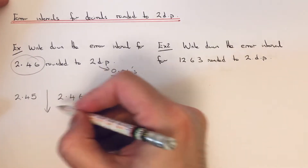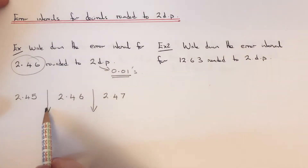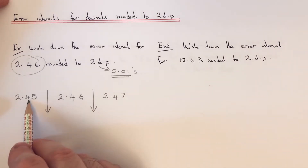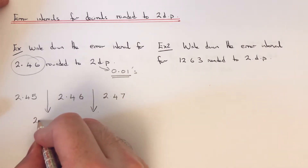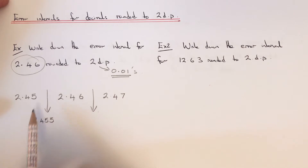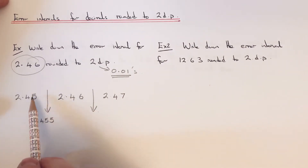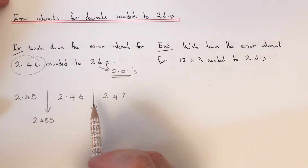We then need to go halfway between these two numbers to get our lower bound and our upper bound. Halfway between 2.45 and 2.46 would be 2.455. If you're having trouble working out the halfway number, just add these two decimals up and then divide by two.